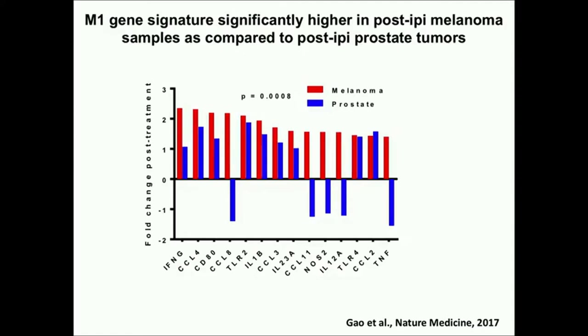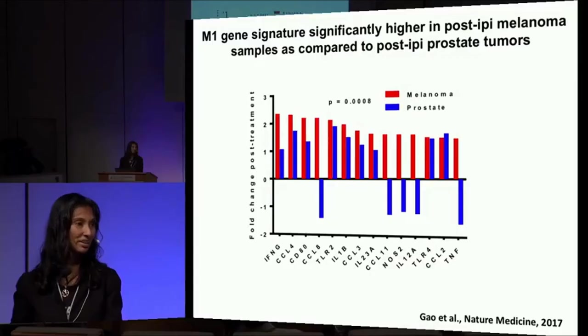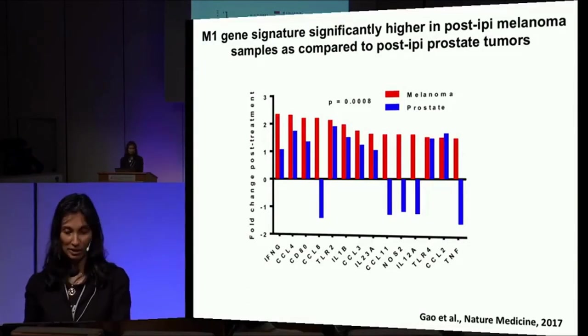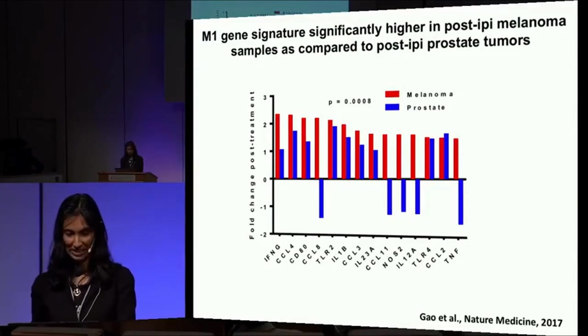We were able to show that in the VISTA knockout mice, you actually have improved anti-tumor responses, and if you combine anti-VISTA therapy with anti-CTLA4 and anti-PD-1, you get much better rejection of these kinds of tumors in a mouse model. We designed the clinical trial that's now ongoing in patients based on this data.